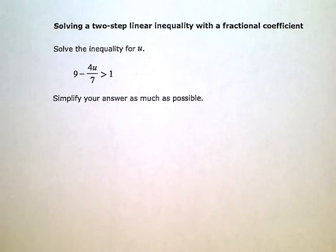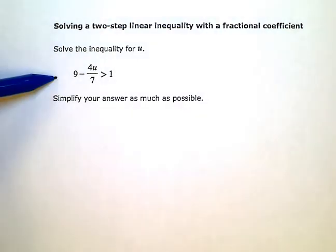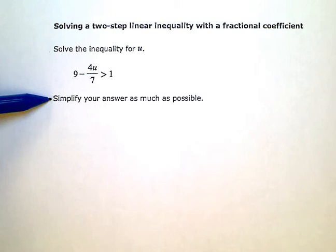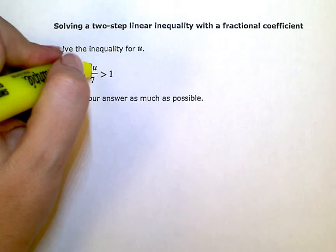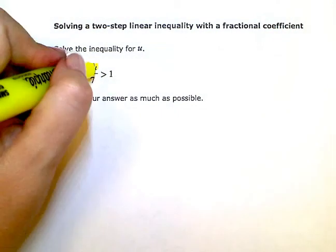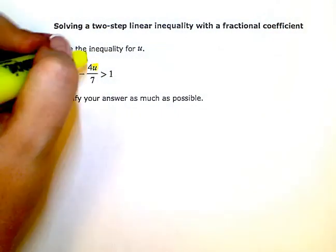Solving a Two-Step Linear Inequality with a Fractional Coefficient. I have an inequality here. The instructions say to solve the inequality for u and then simplify my answer as much as possible. I need to isolate, or get this u all by itself, on one side of my inequality symbol.